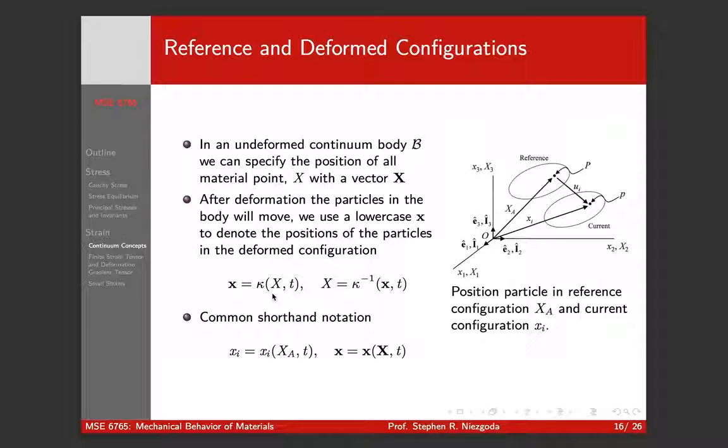We can always define mappings between the final and the initial. So we use kappa for this mapping. So we can write the deformed state as a function of the initial state, or we can invert it and write the initial state as a function of the final state. So we have some really common shorthand notation here, and it gets a little confusing.